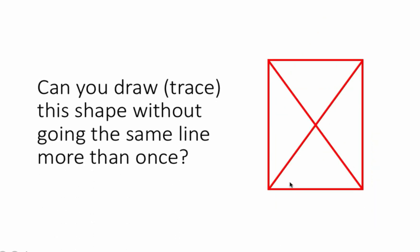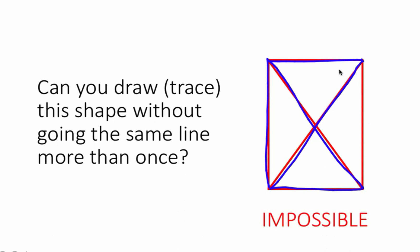Now let's try another graph. Can we trace this shape without going the same line more than once? Let's say we do it this way: one, two, three — if I go up here, four, and go down here, I can no longer trace this right side without lifting my pen. You can do some experimentation and you will realize that it is impossible to trace all these lines without lifting our pen and without crossing the same line more than once. Therefore, this graph at the right is not traversable.